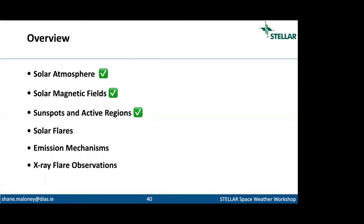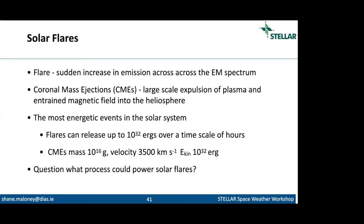So we've covered the solar atmosphere at a high level, magnetic fields, and sunspots and active regions. Now we move to the meat of the lecture: solar flares and emission mechanisms, particularly X-ray emissions. What is a solar flare? Basically it's a sudden increase in emission across the electromagnetic spectrum. It can be associated with particles as well, but the main component is increased emission in the EM spectrum, particularly in the X-ray regime.